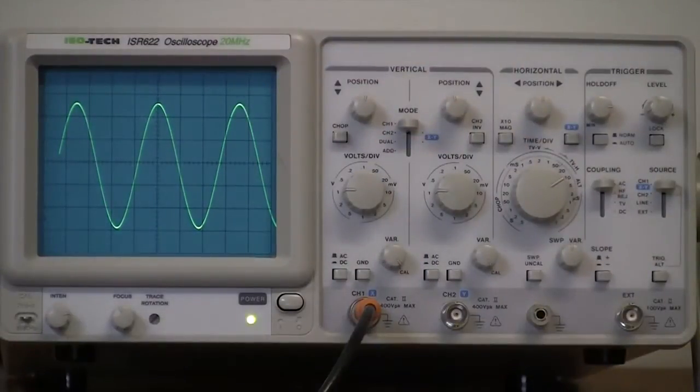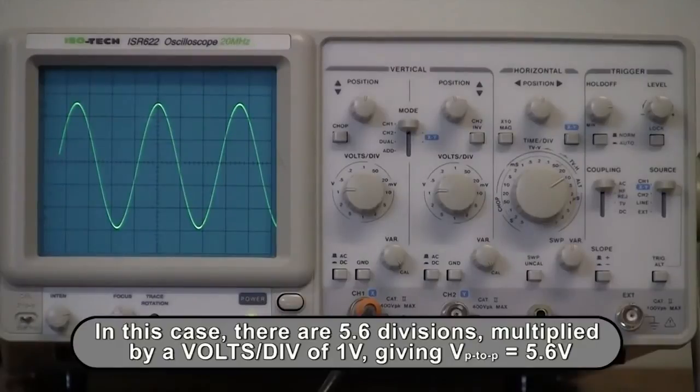In this case, there are 5.6 divisions multiplied by a volts per division of 1 volt, giving a peak-to-peak voltage of 5.6 volts.